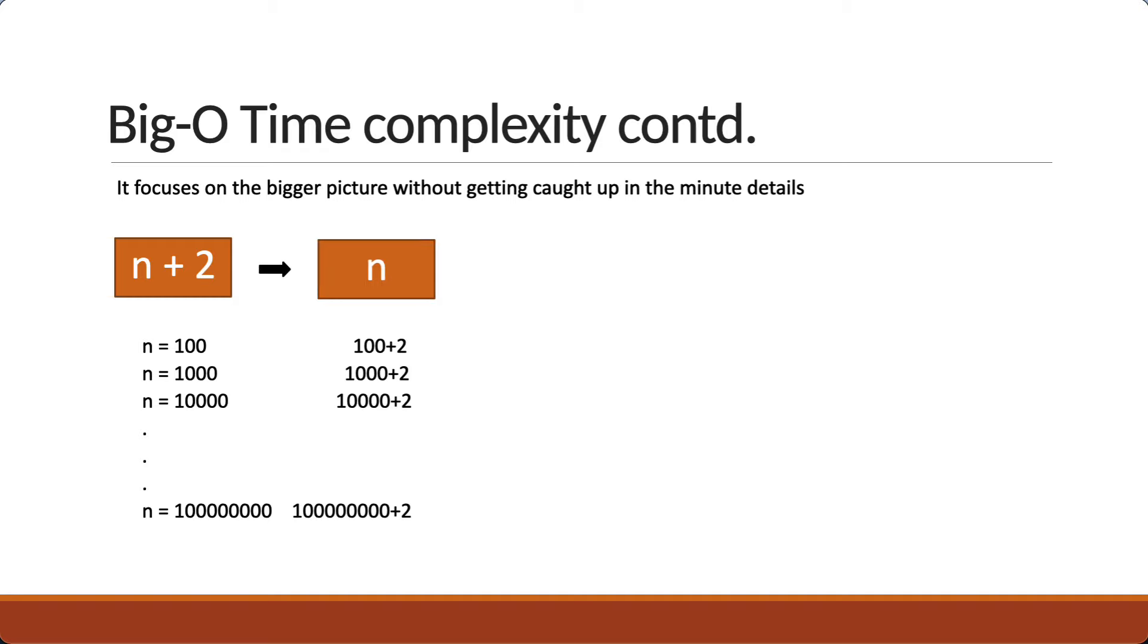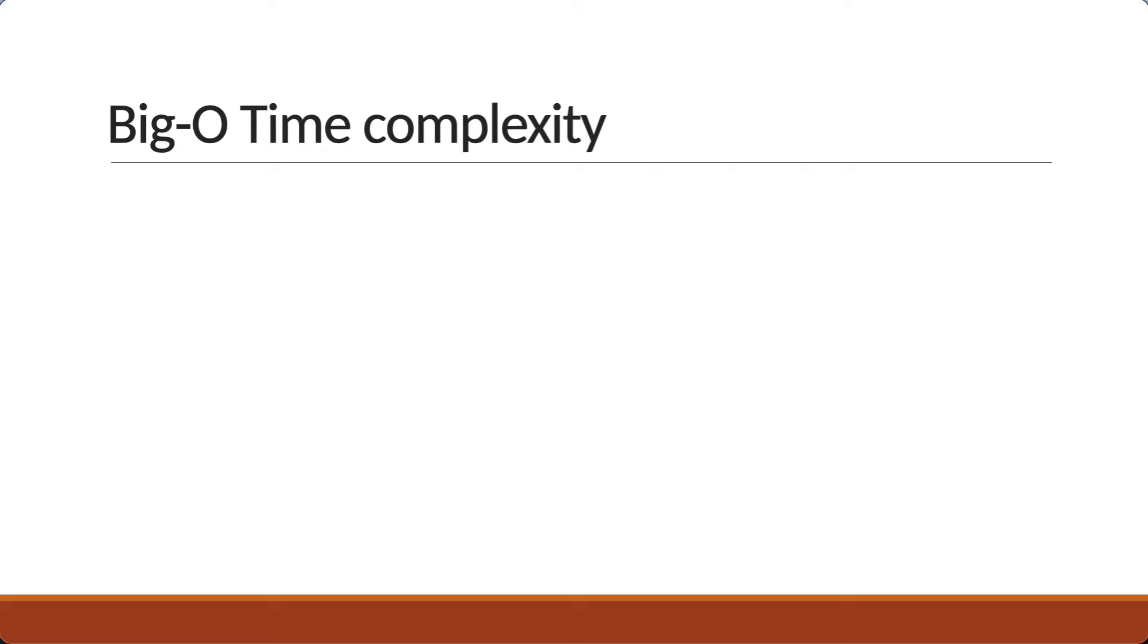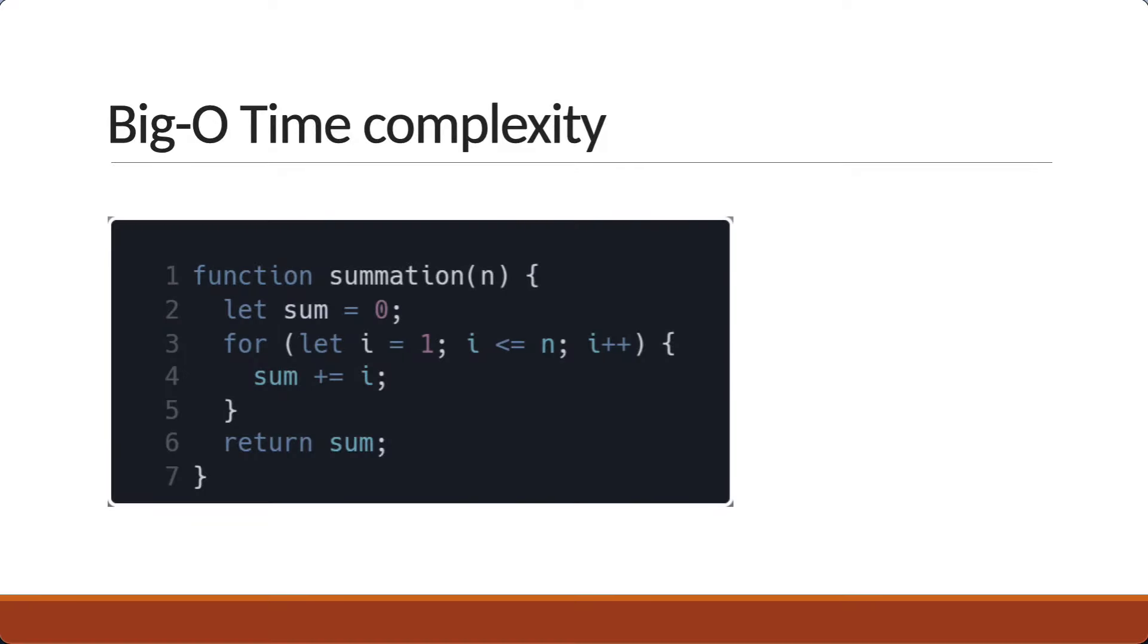N plus 2 can be approximated to just n since n contributes the most to the total value and not the additional 1 or 5 or 50 extra steps. Or in our case, 2 extra steps. You don't have to get caught up in the smaller steps that don't affect the performance as much as the others. So the worst case time complexity, which is also referred to as just the time complexity of our summation algorithm, is Big-O of n, which is referred to as linear time complexity. What this means is that as the size of the input increases, the time complexity also increases.